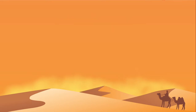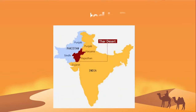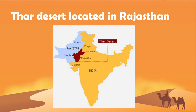You know desert? The land of the desert is very dry and is filled mostly with sand. Can you identify this desert state of India? It is Rajasthan. The Thar desert is situated in Rajasthan. It is also called the great Indian desert.